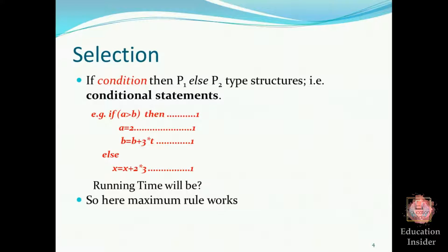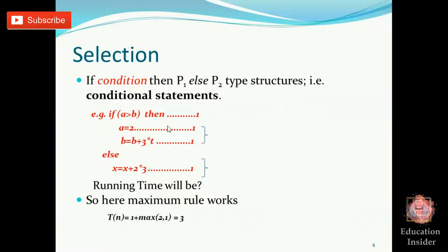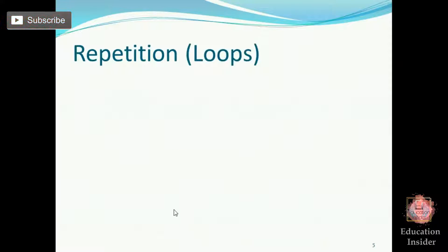What is the maximum rule? The maximum rule states that if there are two sequences of operations and we must select one, we select the sequence with the greater running time. In this example there are two sections — the maximum of the two is selected. The 1 represents the if condition check, and the maximum of the two branches gives 2, so the total running time is 1 + 2 = 3.